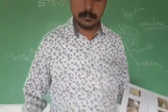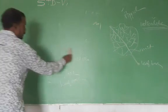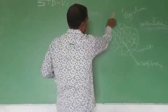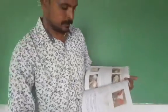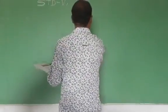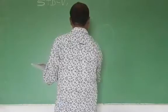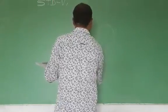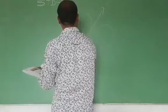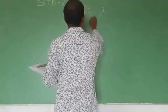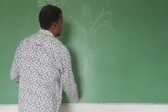Let us come to flower. Students, flower is one of the important parts of the plant, and it is also known as the reproductive part of the plant. Let us take a flower — it is better to get a hibiscus. So, this is the flower.